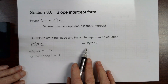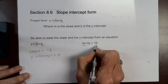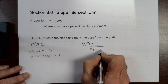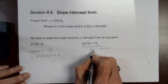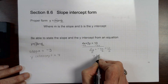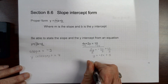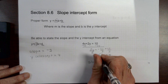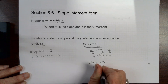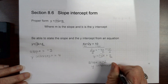This one is not in the correct form, so I first rearrange it. I add negative 4x to both sides to get 2y equals negative 4x plus 10. Then I divide everything by 2, giving y equals negative 2x plus 5. So my slope is negative two and my y-intercept equals five.